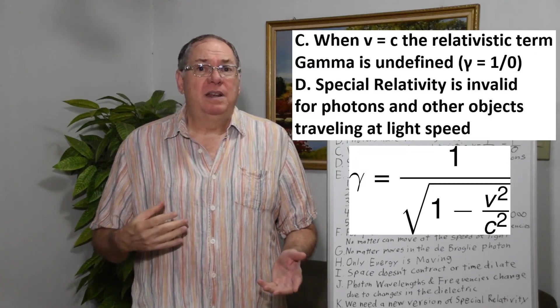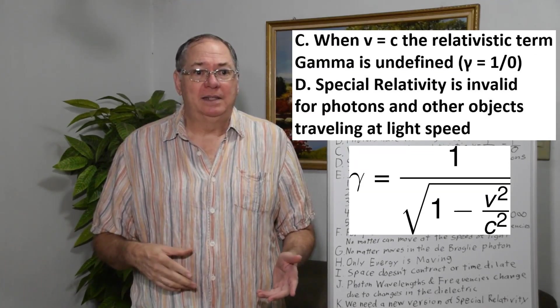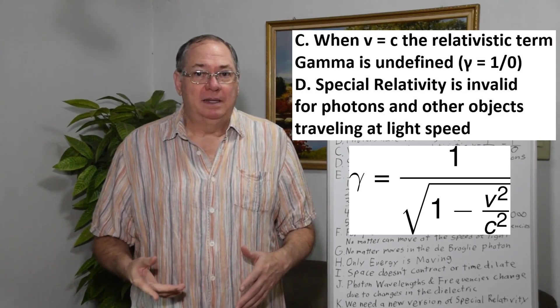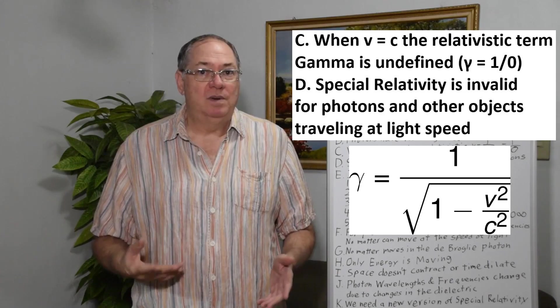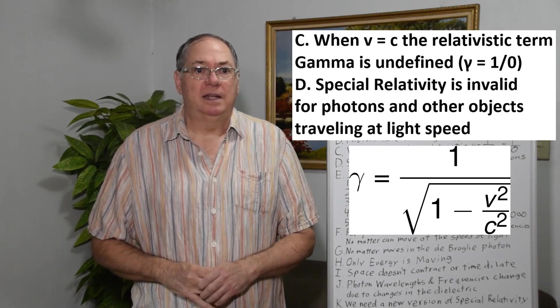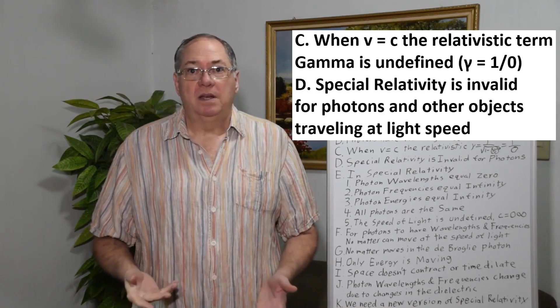So in relativity, as Don explains, the relativistic term gamma goes to 1 over 0 when the velocity equals the speed of light, so it becomes undefined.